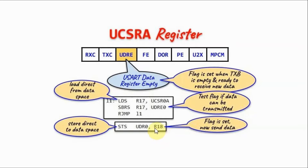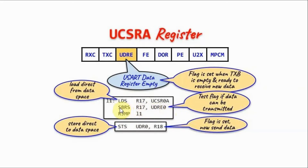Before transmitting a byte, we must verify that register TXB is empty by checking the data register empty flag. We copy control status register A into register R17, then use the SBRS instruction — skip if bit in register is set — to check the flag. If the flag is not set, the skip is ignored and we loop back to re-check. Once the flag is set, the next instruction is skipped and we jump to the instruction that sends the byte to the destination peripheral.